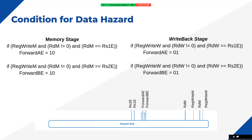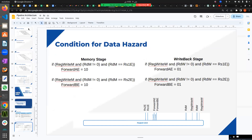The hazard unit takes the following inputs: RegWriteW and RDW from the writeback stage, RegWriteM and RDM from the memory stage, and RS1E and RS2E from the execute stage. These inputs are used for condition checking. The two output signals generated are ForwardAE and ForwardBE, which control the muxes in the pipeline architecture. Today we are just designing the hazard unit; in further lectures we will integrate it with the current architecture and verify that data hazards are resolved.